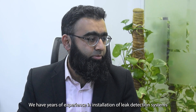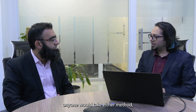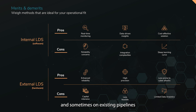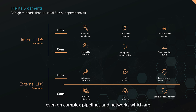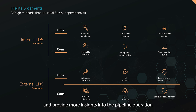We have years of experience installing leak detection systems on complex and long-distance pipelines. External systems based on fiber optic are generally considered a more reliable form of leak detection, but these benefits come at significant capital cost. On existing pipelines, it is often not feasible to install fiber optic-based systems, especially on complex pipeline networks already in operation where it is hard to invest heavily in external hardware LDS systems. Software-based systems are less expensive and provide more insights into pipeline operations and leak scenarios that are otherwise not possible with external systems.